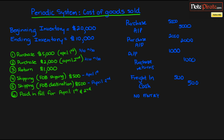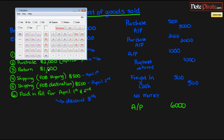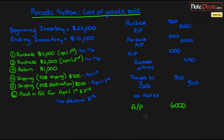We're reducing accounts payable by $6,000. We paid for this within the discount period — let's say we paid on the 8th — so we collect the 2% discount on both purchases, which is 2% of $6,000, equaling $120. That gives us a purchases discount of $120, and cash will be the credit for $5,880. And that would be paying in full.